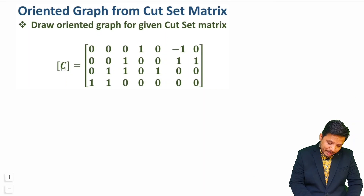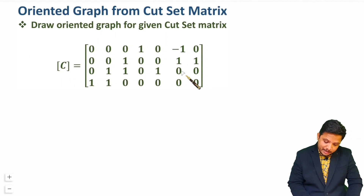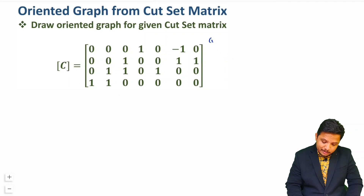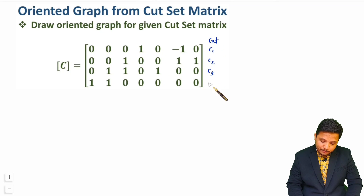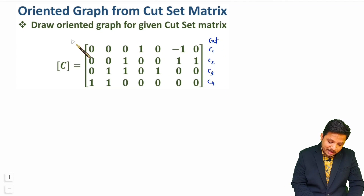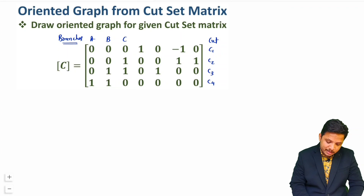If you observe, we are having a cut set matrix here. Vertically we are having cuts — total four cuts: c1, c2, c3, and c4. Horizontally we are having branches. Let us give naming to the branches: a, b, c, d, e, f, and g.